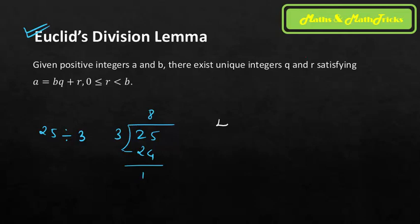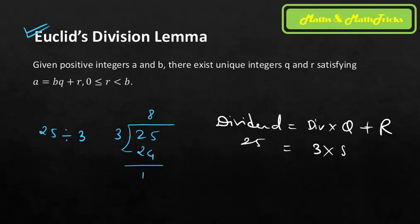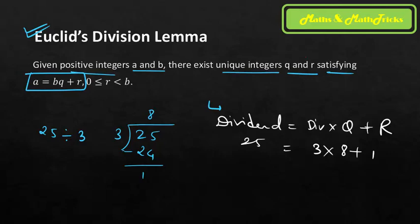Your teacher used to ask you to write this division in a specific format — can you recall? You were supposed to write: dividend = divisor × quotient + remainder. In this case, dividend is 25, divisor is 3, quotient is 8, and remainder is 1. This format is precisely what Euclid's Division Lemma formalizes.